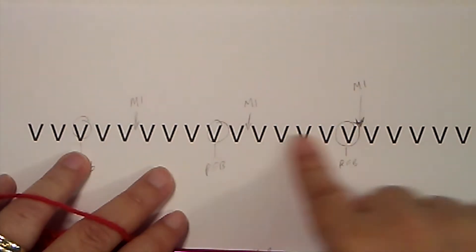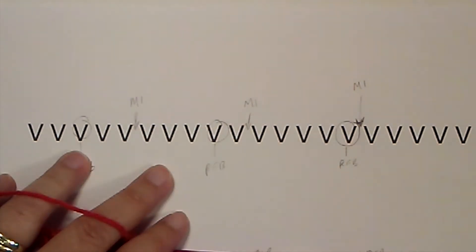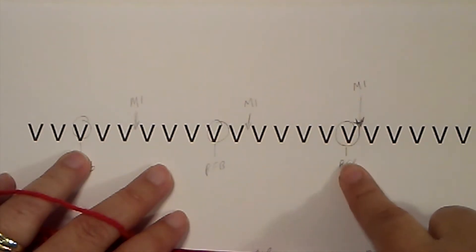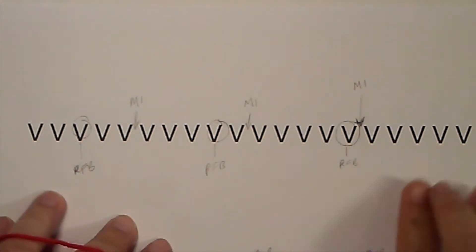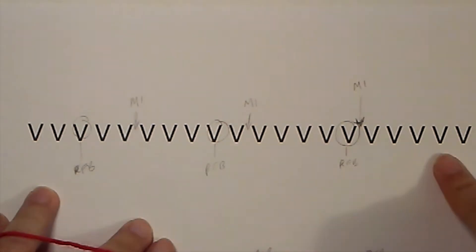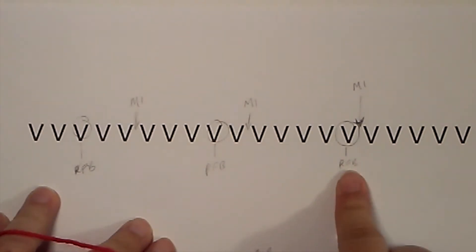But if the pattern doesn't specify which increase to use and we decide to use our purl front and back, if we're working on a purl row, so we follow what it says, we work five stitches, increase, work five stitches, increase, you can see that it isn't balanced.